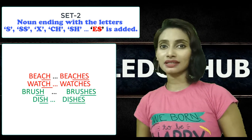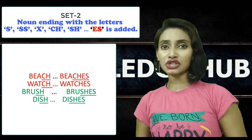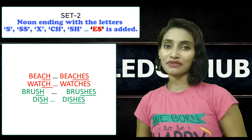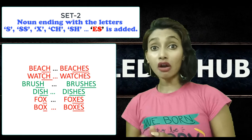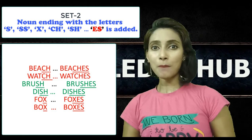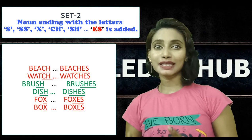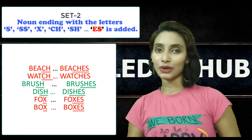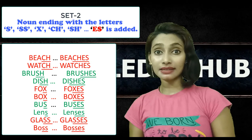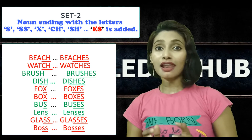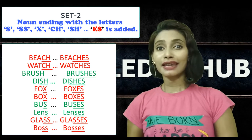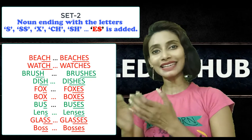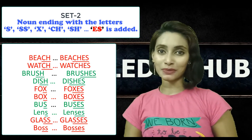Brush, brushes; dish, dishes — these words end in SH and we added ES. Fox, foxes; box, boxes — these words end in X and hence we added ES. Bus, buses; lens, lenses — these nouns end in S and we added ES for plural forms.